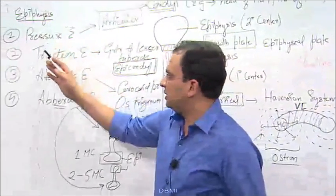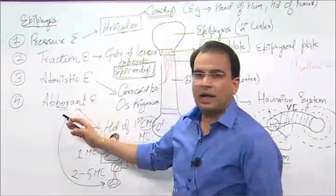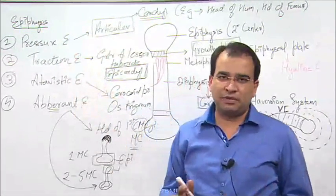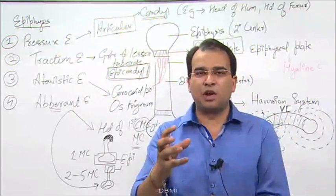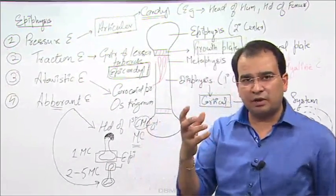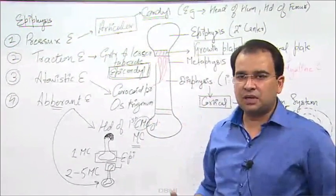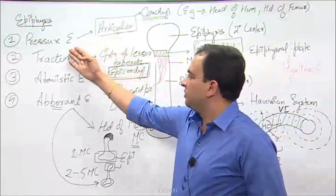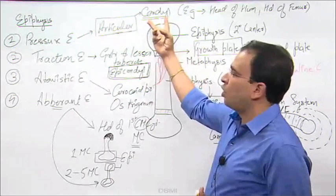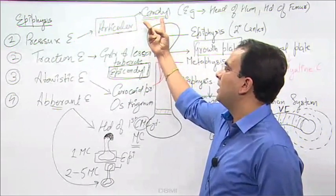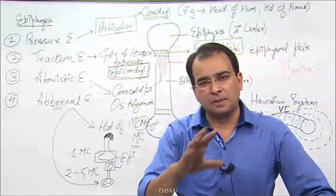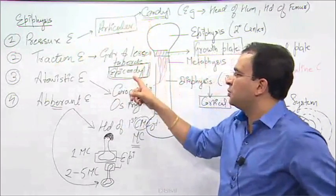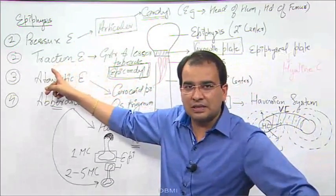Let me repeat the entire thing. Epiphyses: we have pressure, traction, atavistic, and aberrant. Pressure epiphyses are articular epiphyses — they are the articular surfaces of the long bone: head of the humerus, head of the femur, condyles of the tibia — all these are pressure epiphyses. Whenever you find condyles in an option, it has to be pressure epiphysis. If you find epicondyle in the option, it will be a traction epiphysis.